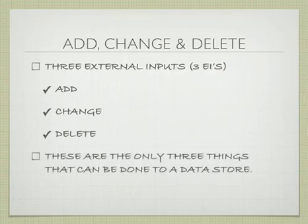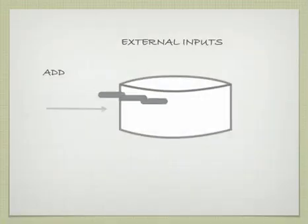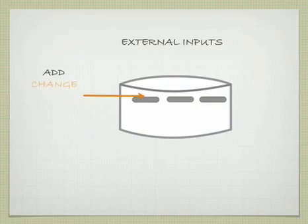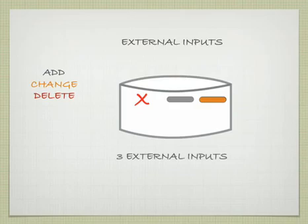These are the only three things that can be done to a data store. External inputs can add information to a file, they can change information to a file, and they can delete information to a file. This would represent three external inputs and three different actions.